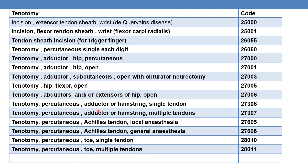For tenotomy percutaneous of the adductor or hamstring, single tendon, report 27306; for multiple tendons, report 27307. For tenotomy percutaneous of the Achilles tendon with local anesthesia, report 27605; with general anesthesia, report 27606. For tenotomy percutaneous of the foot, report 28011.